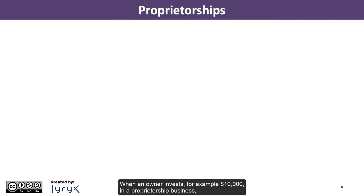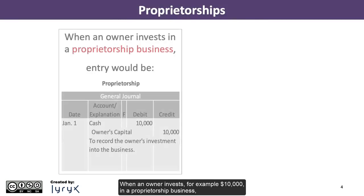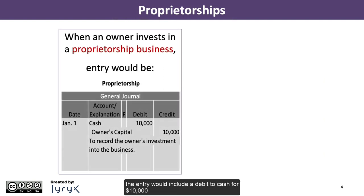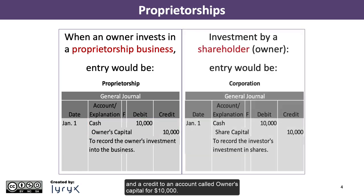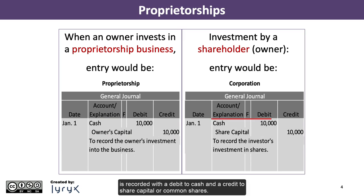When an owner invests, for example $10,000, in a proprietorship business, the entry would include a debit to cash for $10,000 and a credit to an account called owner's capital for $10,000. An investment into a corporation by a shareholder, or owner, is recorded with a debit to cash and a credit to share capital or common shares.